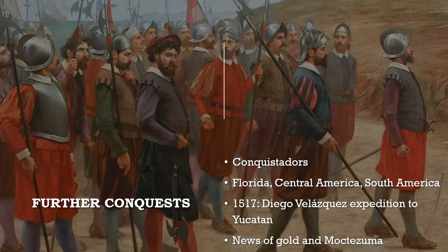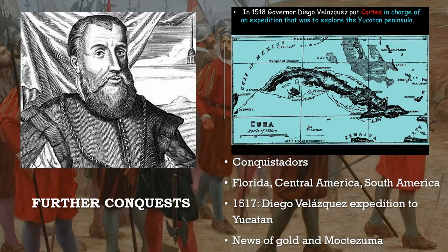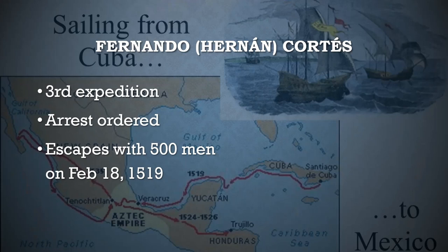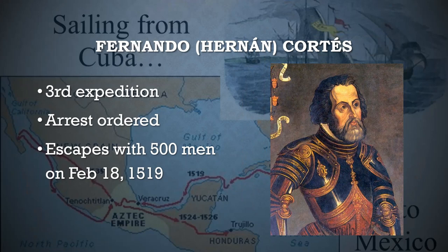In 1517, the Spanish Cuban governor Diego Velazquez launched two expeditions to Yucatan. The first expedition was attacked and forced out. The second returned with some gold but, more importantly, news of a vast empire ruled by a powerful ruler named Montezuma. Eager for more gold and riches, Governor Velazquez organized a third expedition, to be led by Fernando Cortes, also known as Hernan Cortes. Cortes had previously supported Velazquez in the conquest of Cuba. However, Velazquez canceled the expedition and ordered Cortes's arrest. Before Velazquez's men could reach him, Cortes gathered 500 men — including sailors, Cuban natives, and Africans — and sailed to Yucatan on February 18, 1519.